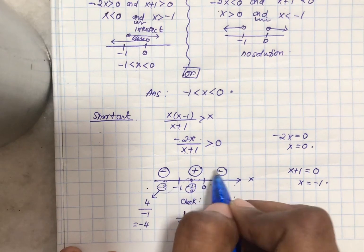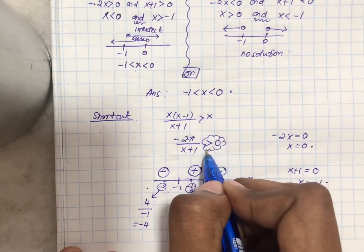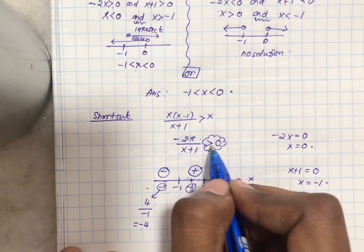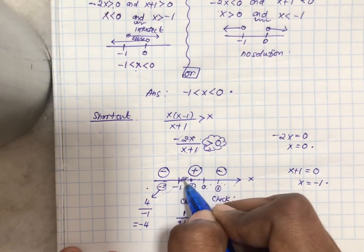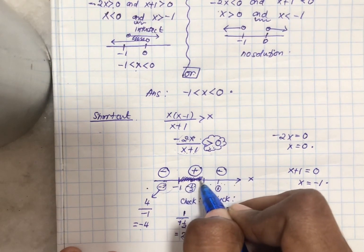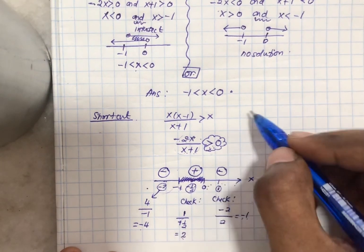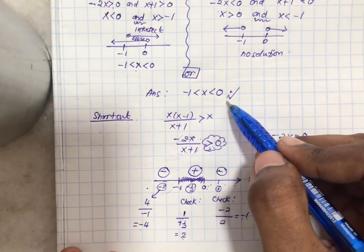Now you go and choose based on what the question wants. You want this particular rational function to be greater than 0, to be positive. So where is it positive? Here. So what is the value here? From negative 1 to 0. Don't you think the answer is very much similar to this? So that's how easy the shortcut actually works.